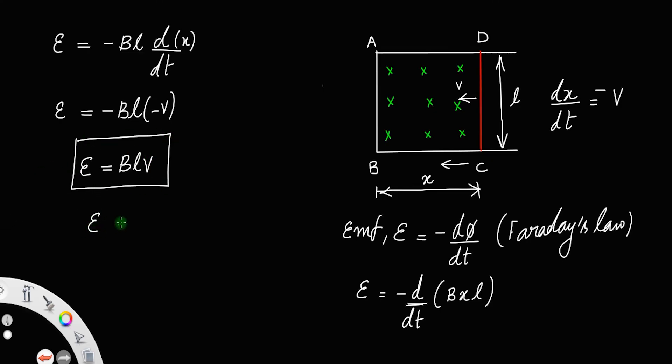Clearly, we have EMF proportional to velocity. So what this means is, when you increase the velocity of the motion of the rod, the EMF also increases. When B is increased, the EMF also increases.